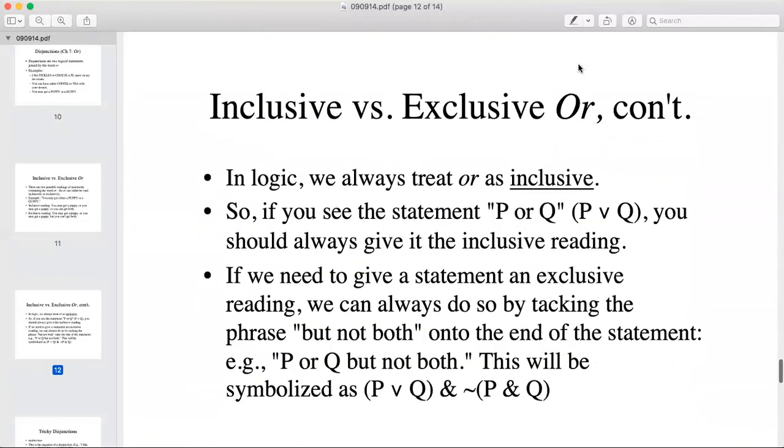In logic we always treat OR as inclusive. So if you see the statement P or Q, you will always give it the inclusive reading. The statement you may either get a puppy or a guppy in logic will mean you may either get a puppy, or you may get a guppy, or you could get both.